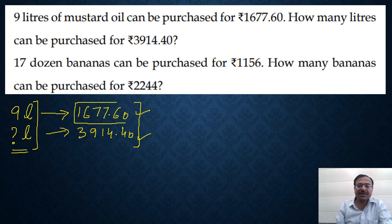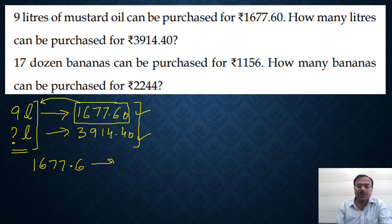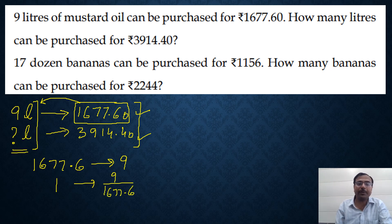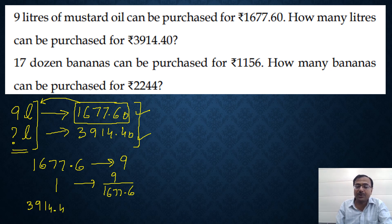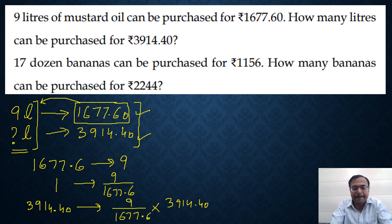For ₹1677.60, you can purchase 9 liters. Understand the question like this: for 1677.6 you get 9 liters, so for 1 rupee you get 9 upon 1677.6. Which value goes to the denominator is the key decision. Then, instead of 1, you have the different quantity 3914.40. Whatever quantity you have written, just multiply that by 3914.40 and you will get your answer. You should be very good at calculation for these concepts; otherwise you are going to struggle.